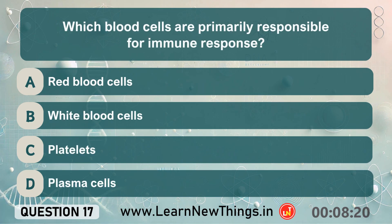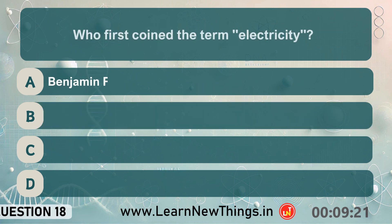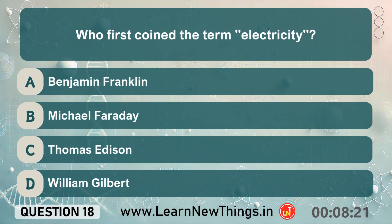Which blood cells are primarily responsible for immune response? White blood cells. Who first coined the term electricity? William Gilbert.